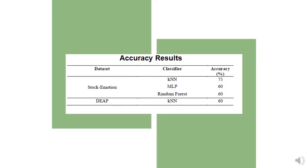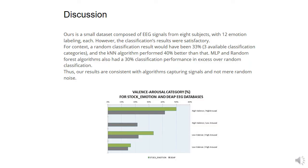In the table, we can see accuracy results for datasets — ours, Stock Emotion, and the public DEAP — showing classifiers, algorithms used, and accuracy obtained. Ours is a small dataset composed of EEG signals from 8 subjects with 12 emotion labels. However, the classification results were satisfactory. For context, a random classification result would have been 33% given three available classification categories, and the KNN algorithm performed 40% better than that. MLP and random forest algorithms also had a 30% classification performance in excess over random classification. Thus, our results are consistent with the algorithm capturing meaningful signals and not mere random noise.